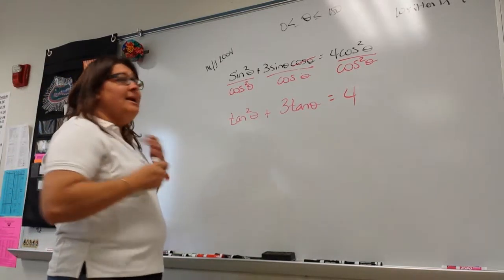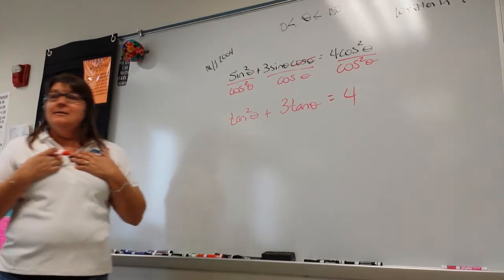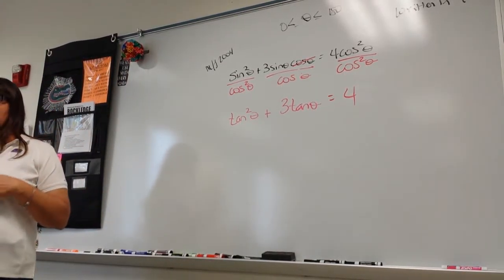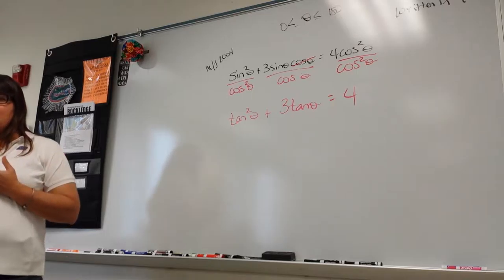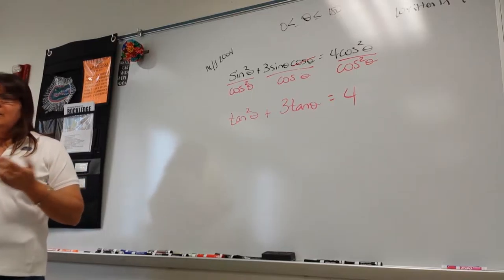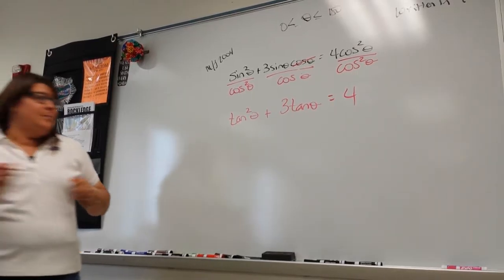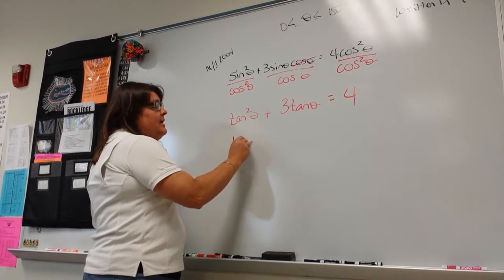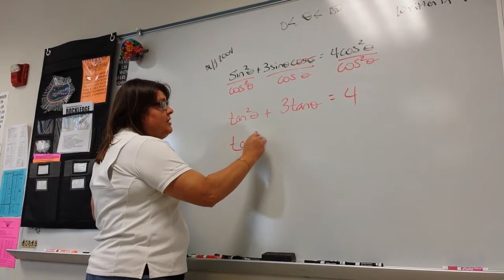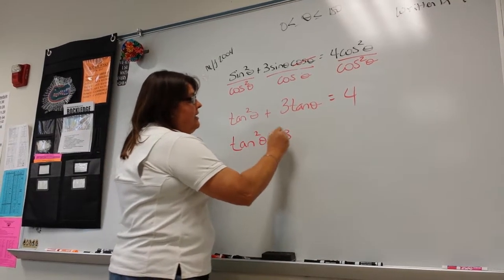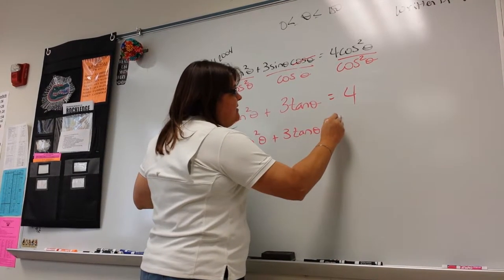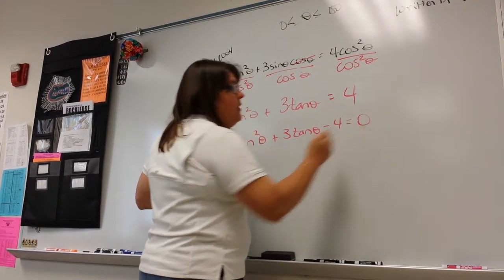I see a trinomial — it screams 'I'm a trinomial, you need to factor me.' So I'm going to pull it all to one side, because we know we can't factor a trinomial unless it's set to zero. Once I start factoring, I have tan theta, tan theta, the number four and one — positive and negative — equals zero.